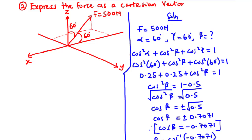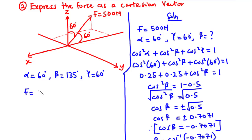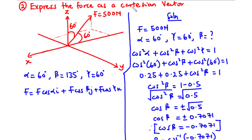Now since we have the value of beta, we can find the direction cosines and multiply each by the magnitude of F. We have alpha = 60°, beta = 135°, and gamma = 60°. Using the formula F = F·cosα·i + F·cosβ·j + F·cosγ·k, we can represent the force F as a Cartesian vector.